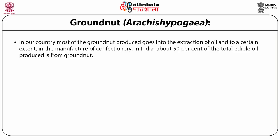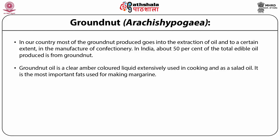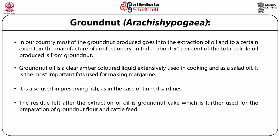Groundnut: In India, most of the groundnut produced goes into the extraction of oil and to a certain extent into the manufacture of confectionery. In India about 50 percent of the total edible oil produced is from groundnut. Groundnut oil is a clear amber-colored liquid extensively used in cooking and as a salad oil. It is the most important fat used for making margarine. It is also used in preserving fish as in the case of tinned sardines. The residue left after extraction of oil is groundnut cake, used for preparation of groundnut flour and cattle feed. Peanut butter and peanut milk are also made from groundnut.